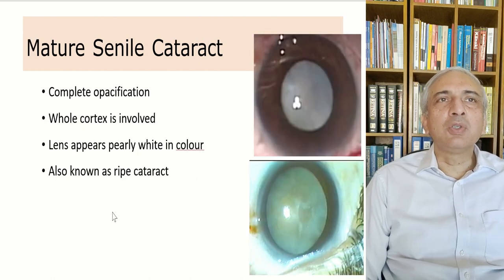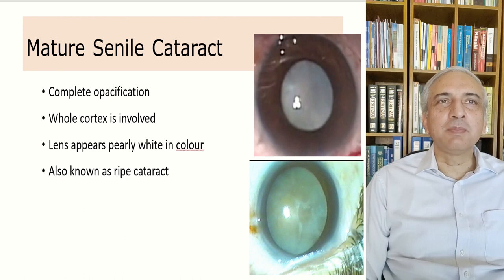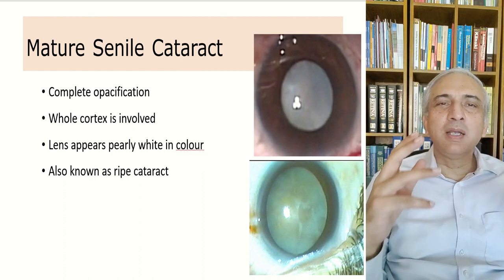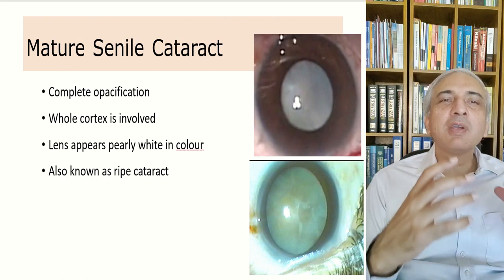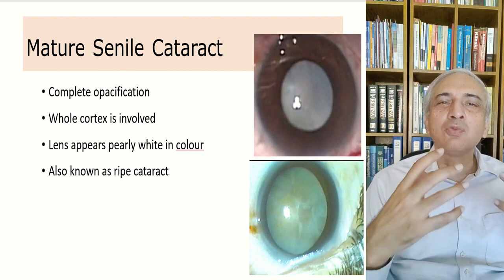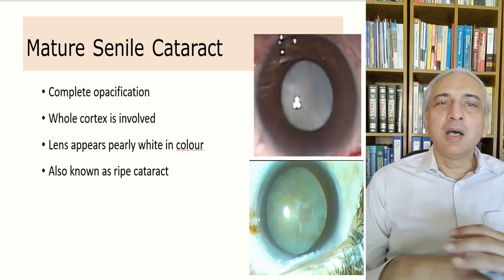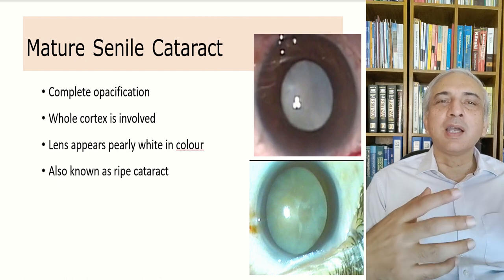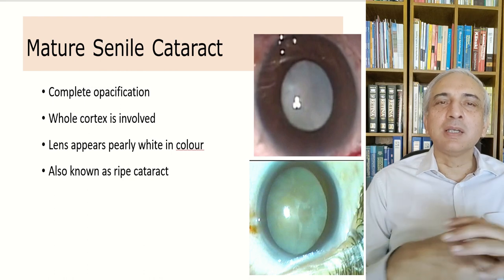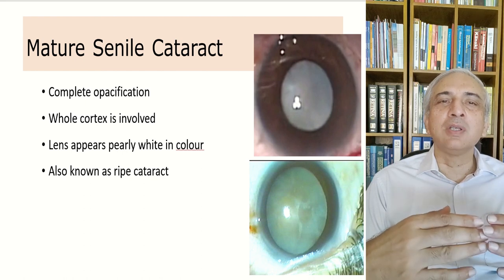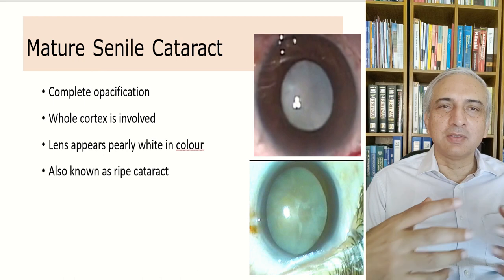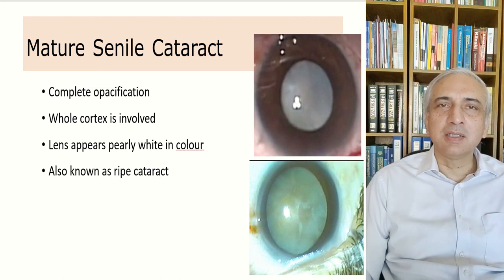In the mature senile cataract, there is complete opacification and the whole cortex is involved. The lens appears pearly white and is also known as a ripe cataract. It is important to correct the common misconception that cataract surgery should only be done when the pupil becomes white — this was practiced in the era of intracapsular surgery 20–30 years ago, when surgery was done only when the patient could no longer see from that eye.